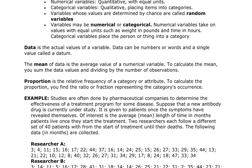Data is the actual values of the variable — it could be numbers, words, or a single value called a datum, such as married or not married. The mean of the data is the average. To calculate the mean, you sum up all the data values and divide by the number of observations. Mean is a numeric value, so you can discuss mean with quantitative data but not qualitative. The proportion of the data is the relative frequency of a category or attribute — calculated as the count of those with the attribute divided by the total number of data pieces.